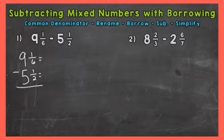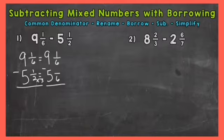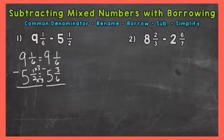So let's rename with that common denominator. Nine and how many-sixths minus five and how many-sixths? Well, one-sixth already has a denominator of six, so we don't need to rename. Now as far as one-half, we know that two times three is six, so we need to do the same thing to the top in order to keep this equivalent. One times three is three. So now we have renamed fractions with a common denominator of six. But we have one-sixth minus three-sixths, so we can't do one minus three.